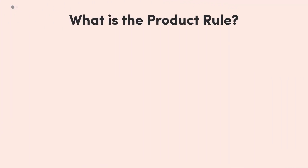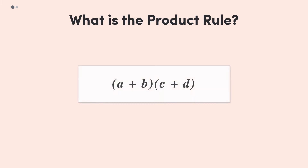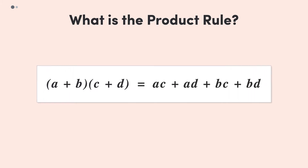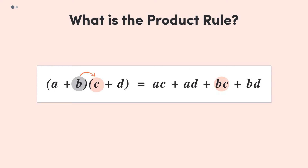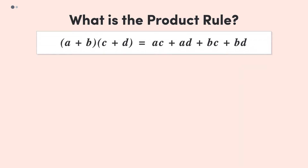First, what is the product rule and how is it useful? We use the product rule to simplify expressions in the form (a + b)(c + d). The product rule tells us that this expression is equal to ac + ad + bc + bd. What we've done here is taken the first term in the first bracket, a, and multiplied it by both terms in the second bracket, c and d. Then we've taken the second term in the first bracket and done the same. For this reason, you may also see the product rule called the FOIL rule or FOIL expansion.